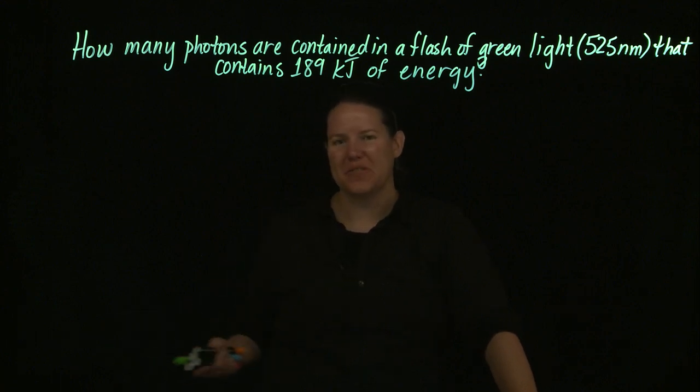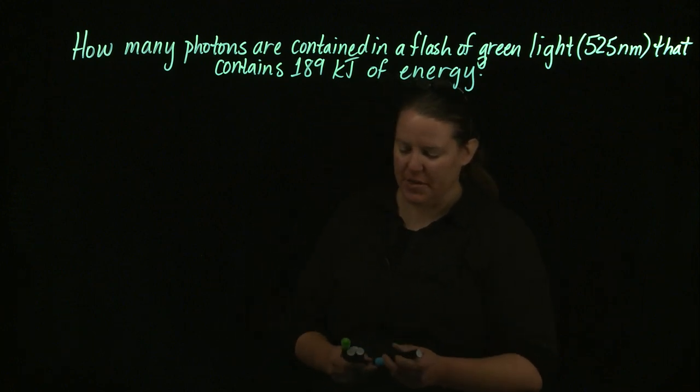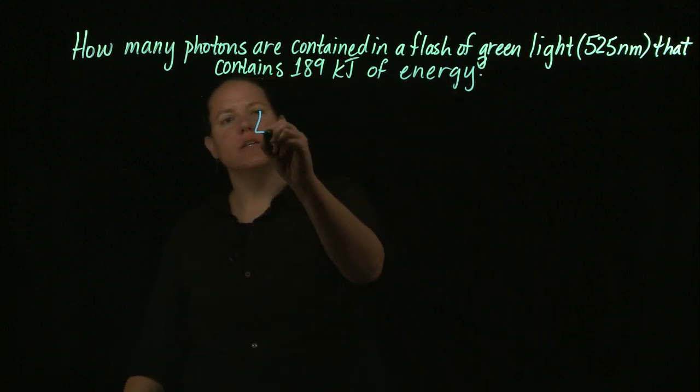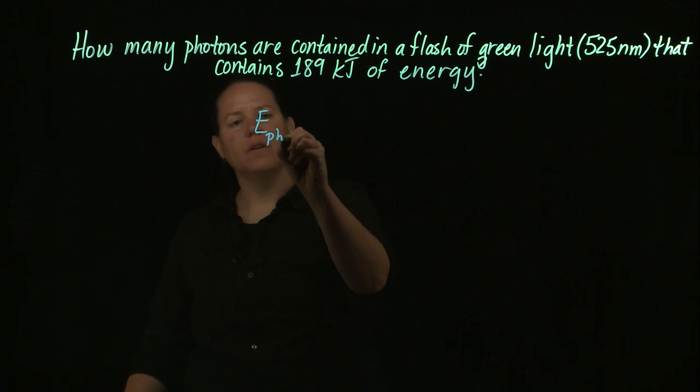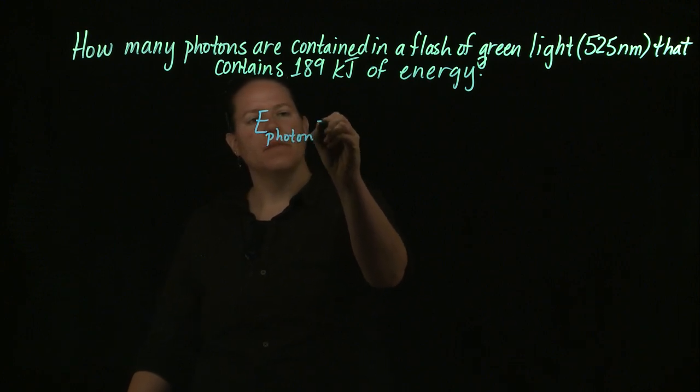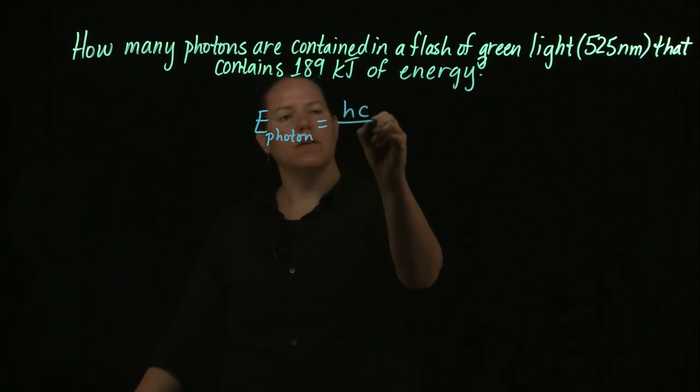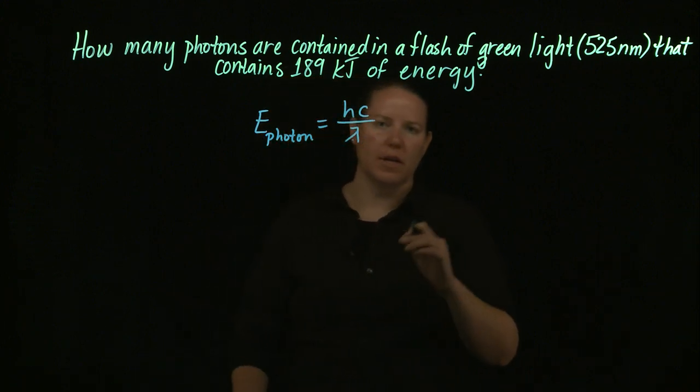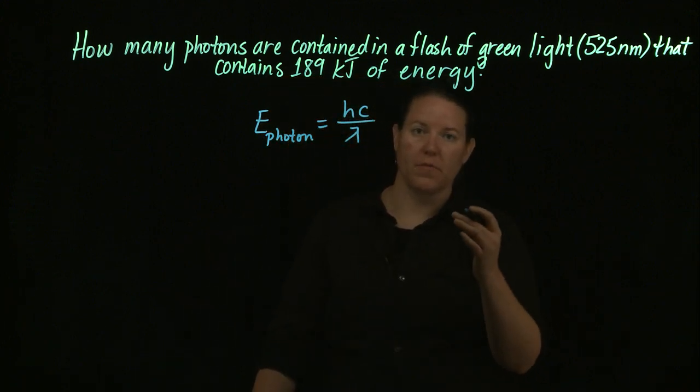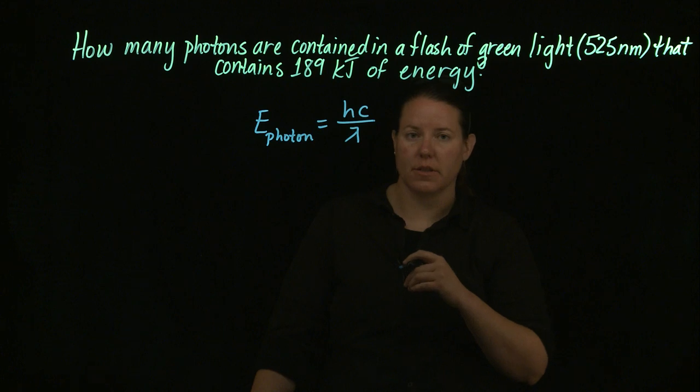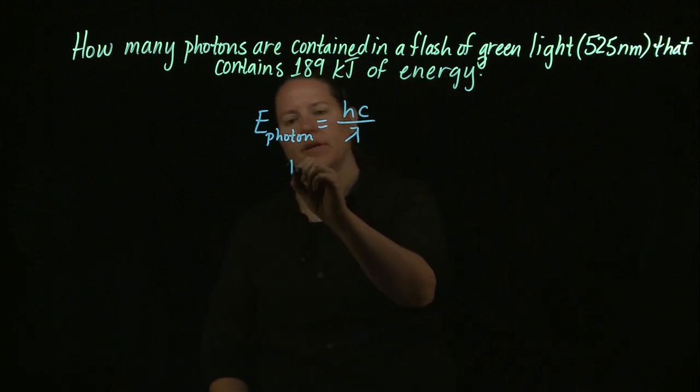So we have this problem. Planck's equation is something that can be used in several different ways. The most common variation of that equation that we're going to use is the energy of a photon equals hc over lambda, where lambda is the only other variable here. It is the wavelength and hc are both constants.